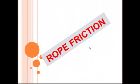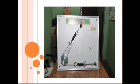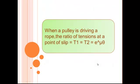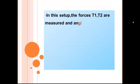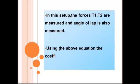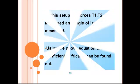Rope Friction. When a pulley is driving a rope, the ratio of tension at a point of slip is equal to t1 divided by t2 equal to e to the power mu theta. In this setup, the forces t1, t2 are measured and the angle of lap is also measured. Using the above equation, the coefficient of friction can be found out.